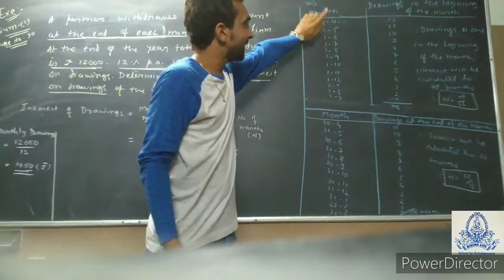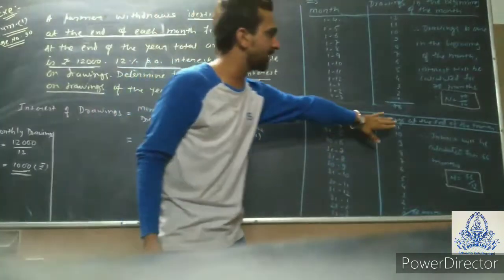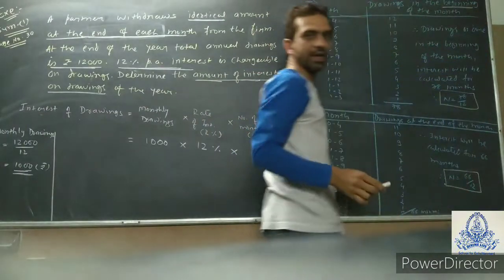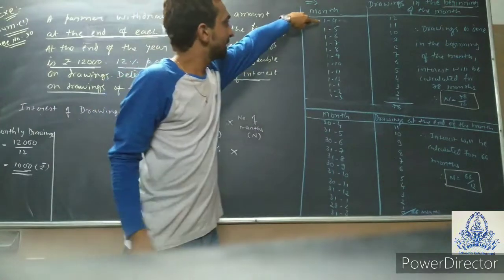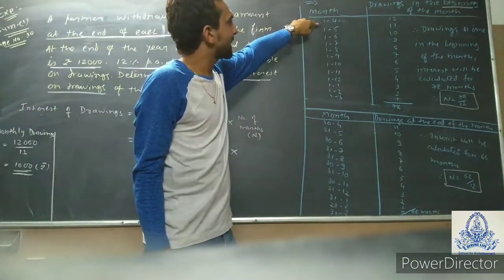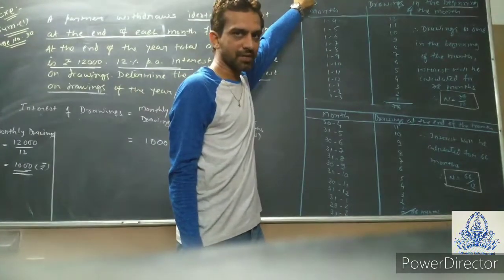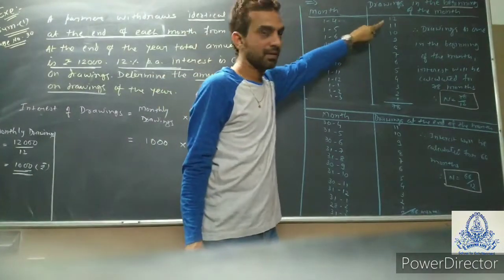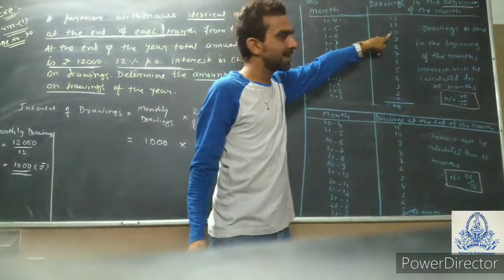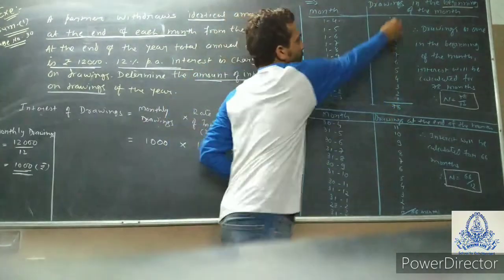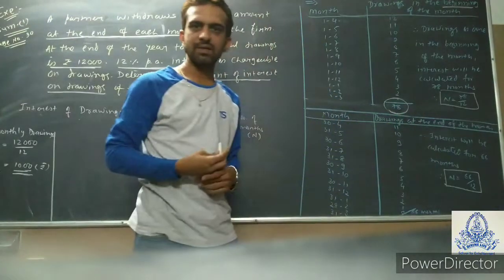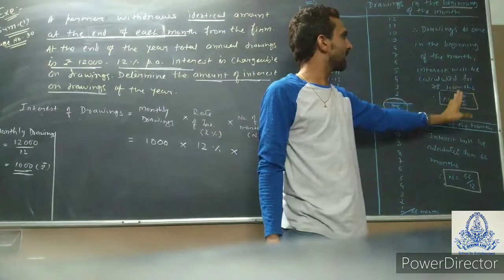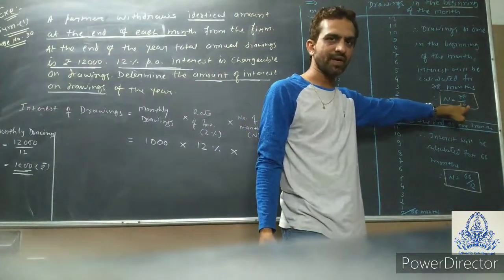For drawings at the beginning of each month: if a partner withdraws money on the 1st of each month, we calculate from 1st April to 31st March as 12 months, 1st May to 31st March as 11 months, 1st June to 31st March as 10 months, and so on. When we total all these months, that comes to 78 months. So for drawings at the beginning of each month, interest is calculated for 78 months, meaning the factor is 78 divided by 12.